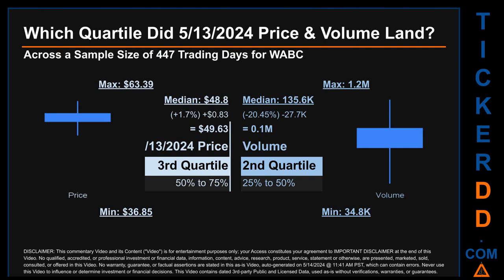Descriptively, WABC has a median price of $48.80. Therefore, May 13th, 2024 price was higher from that middle marker by 1.7 percent. The day's volume of 0.1 million was less than the median by 20.45 percent.